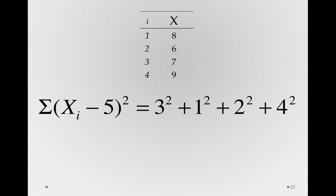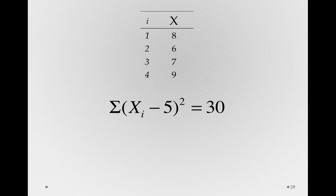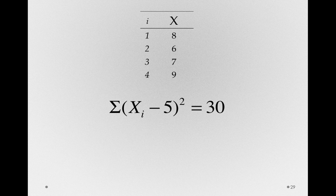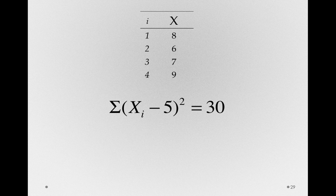9 plus 1 plus 4 plus 16, which happens in this case to also, again, be 30. So, the takeaway message here is that the summation notation is just a simple way for us to write out steps. And remember, all it means is take the sum of whatever operations follow the actual summation sign.